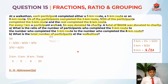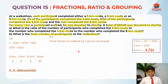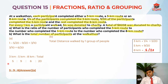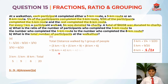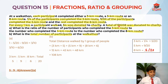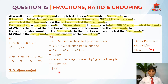Now I'm going to find the total distance walked by one group of people. I'm going to take 20 units as one group of 20 people. One group is: 3km × 5 plus 5km × 9 plus 8km × 6, which gives us 15km plus 45km plus 48km, totalling 108km. For every 1km, $4 was donated, so for every 108km, the donation is 108 × $4, which equals $432.